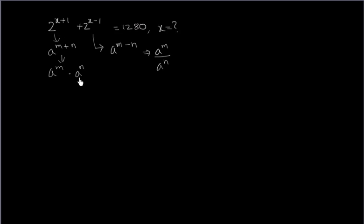According to these laws, if you express 2 to the power x plus 1, you can write it as 2 to the power x into 2 to the power 1. As the bases are equal, powers can be added because this is in product form. And here it is plus 2 to the power x by 2 to the power 1, which is 2. This equals 1280.